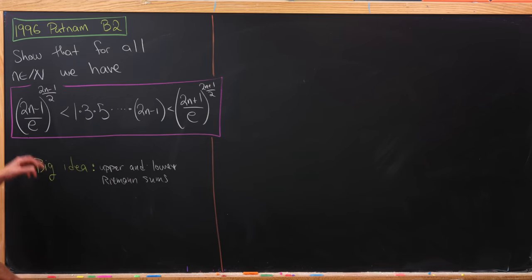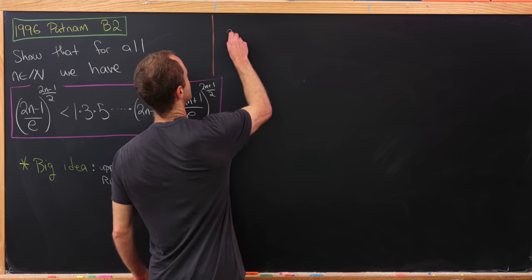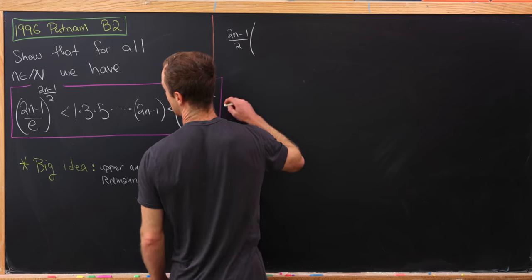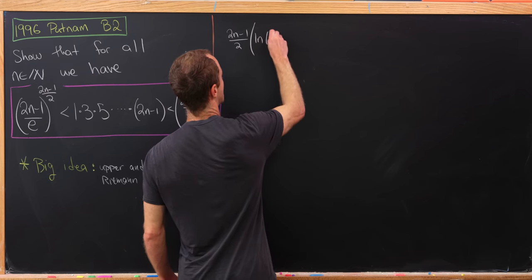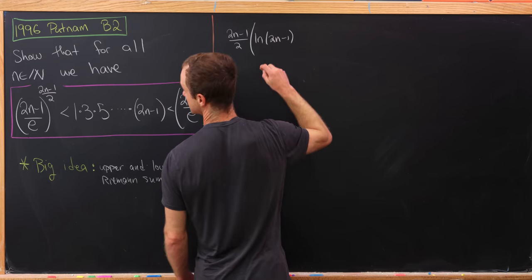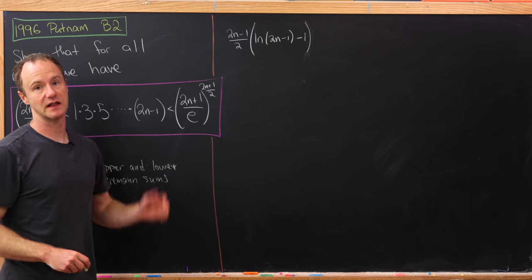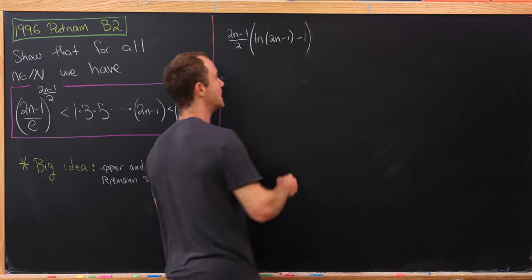So for this left-hand side, we'll end up with 2n minus 1 over 2 times the natural log of 2n minus 1 minus the natural log of e, which is 1. Okay, so that happened to the left-hand part of the inequality.